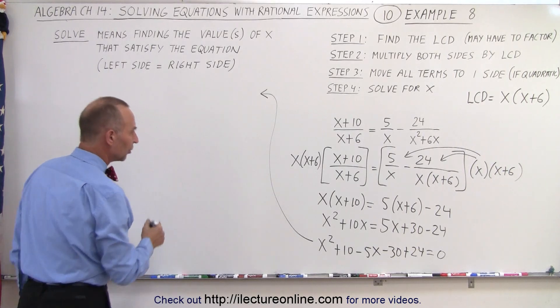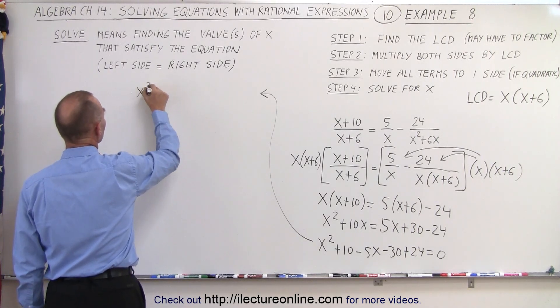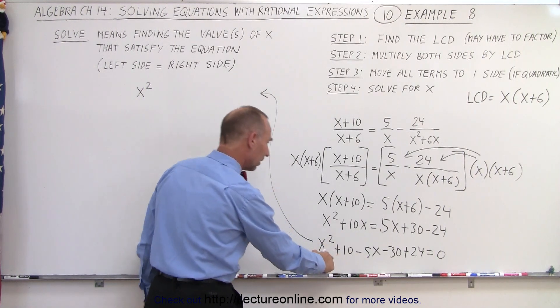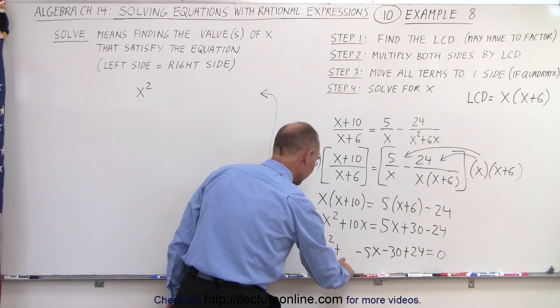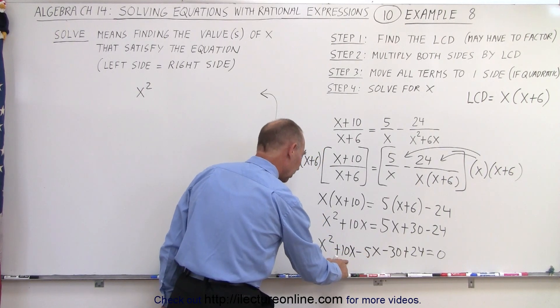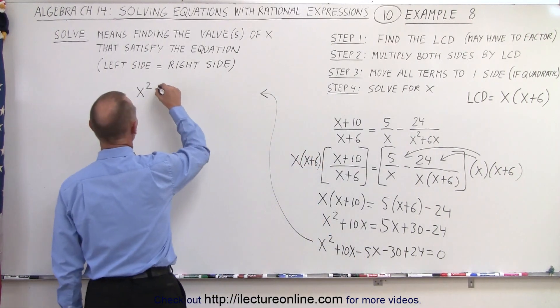So collecting common terms we get x². We have -5x and let's see, I think I left an x off. Yeah, this is 10x. All right, be careful here.